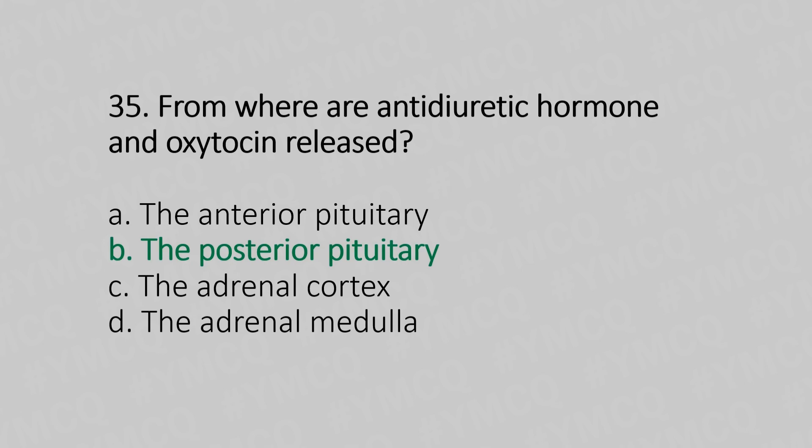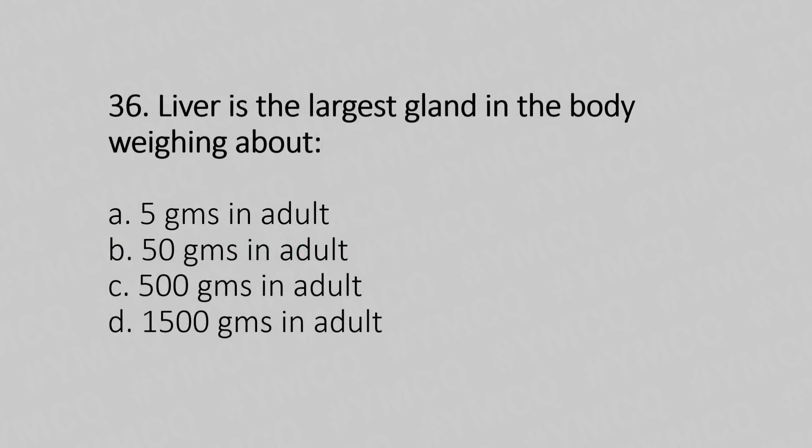Now let's move to question number 36. The liver is the largest gland in the body, weighing about: Option A: 5g in adults. Option B: 50g in adults. Option C: 500g in adults. Option D: 1,500g in adults. And the answer is Option D — 1,500g in adults.